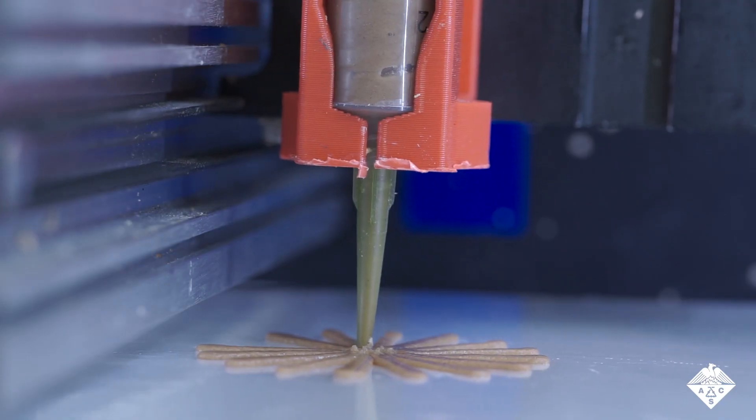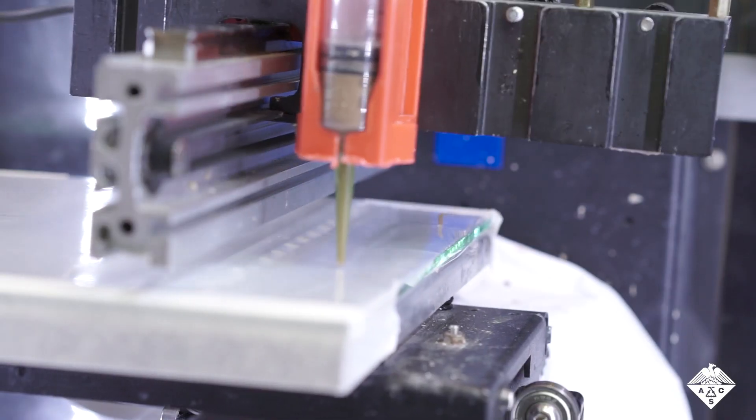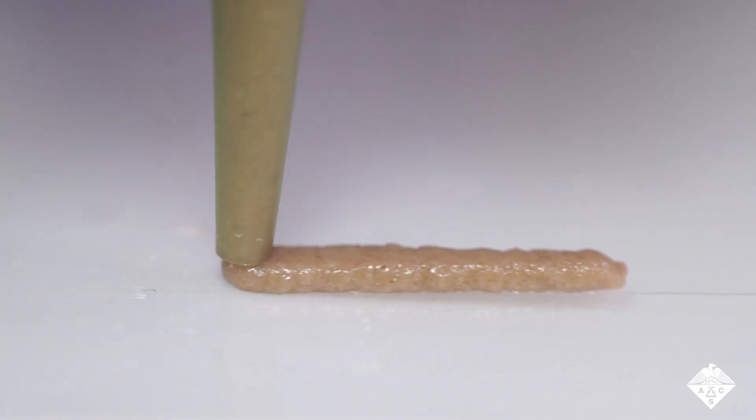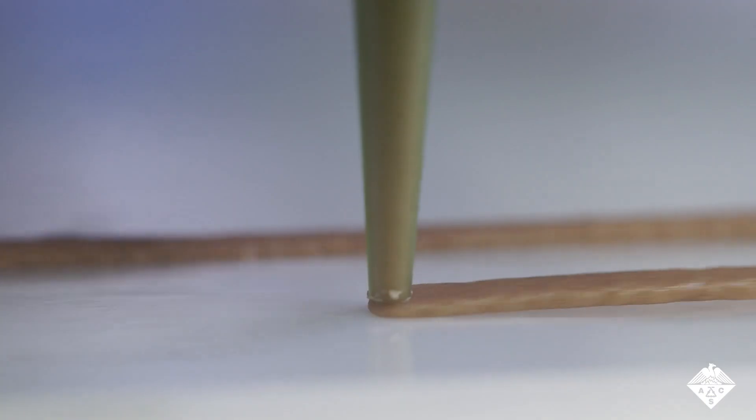The shape of the object can also be controlled by adjusting print speed. For instance, if two lines are printed at different speeds, outwardly they look the same, but their internal structure does not. How fast the wood ink is laid down changes the degree of alignment of the fibers in the ink and consequently, the warping behavior.